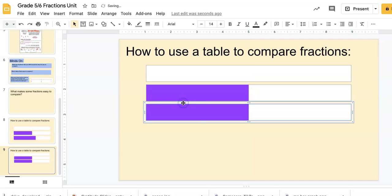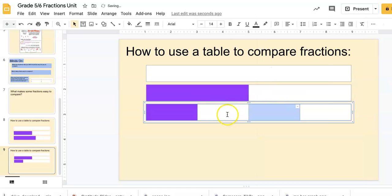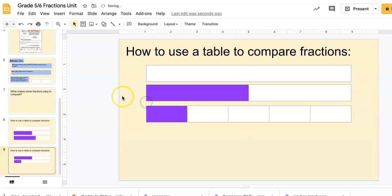Bring up the menu and insert column, insert column, insert column. Now I've got five parts to my whole, and you can see one fifth colored there.